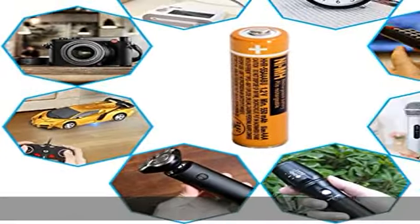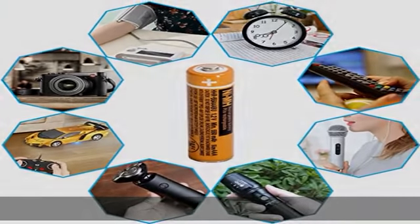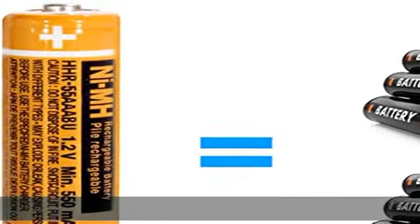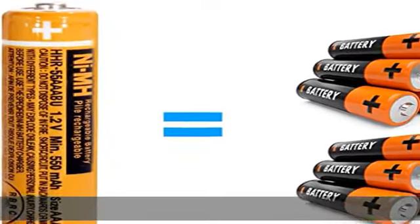NIMH batteries are made of more environmentally friendly materials than traditional batteries and do not contain Hg-Cd-Pb, which is important for reducing heavy metal pollution and more suitable for widespread use in everyday electronic products.